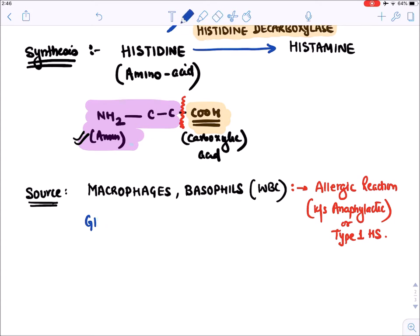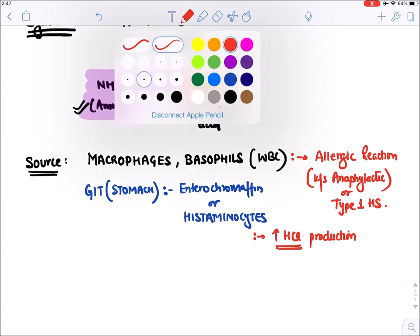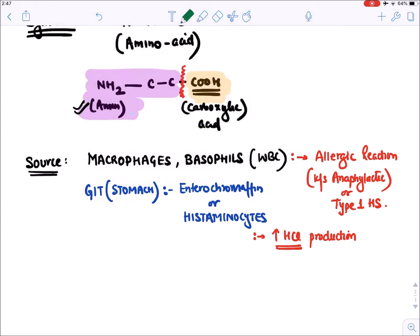Histamine is also present in GIT cells, especially in the stomach, in cells known as enterochromaffin cells or histaminocytes. When these cells release histamine, histamine increases HCl production, helping in digestion.